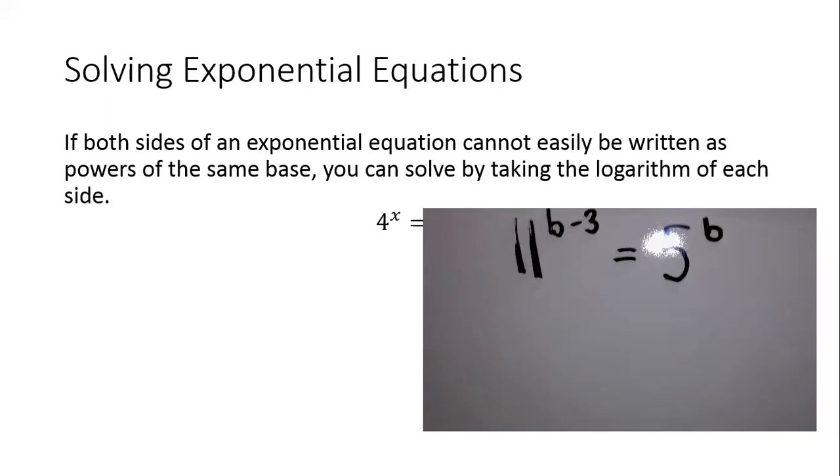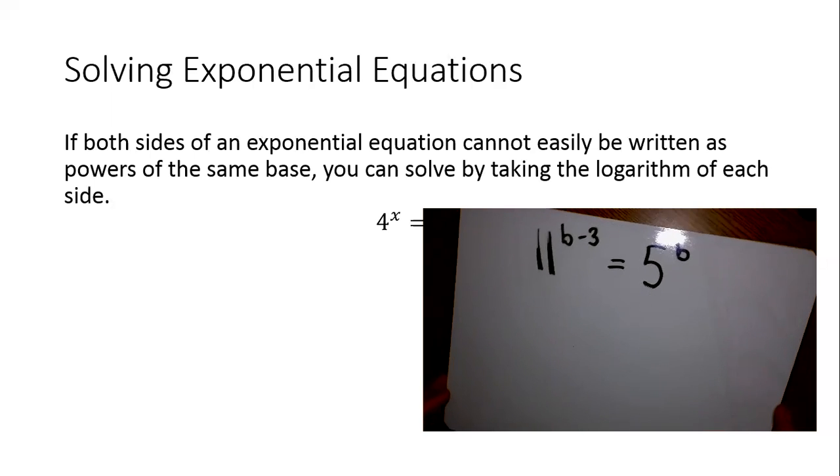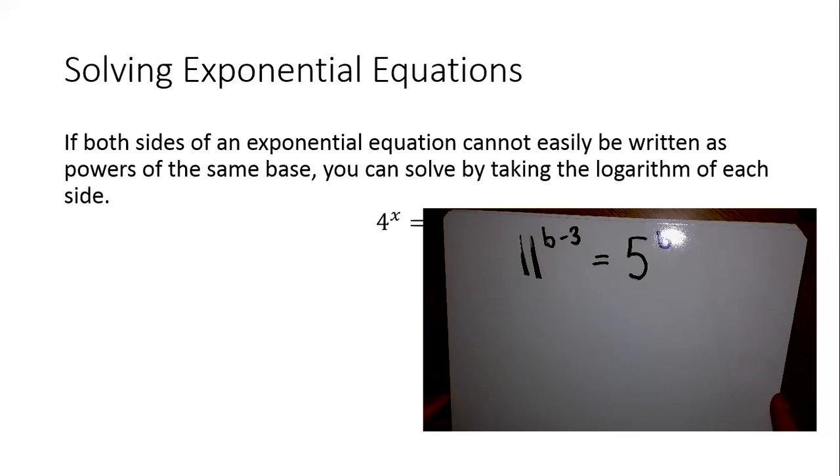Now, one more example before we go, if we make it even a little more difficult, if we look at something like this. We have 11 to the b minus 3 equals 5 to the b.